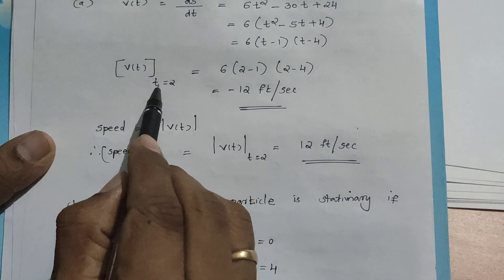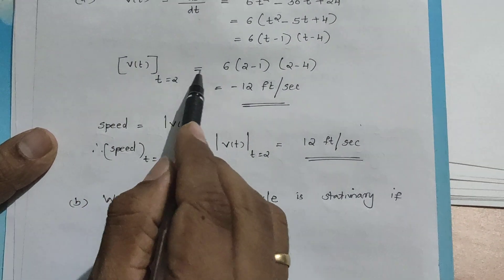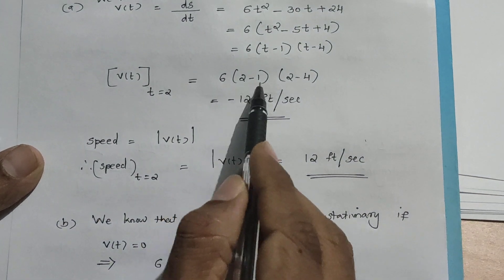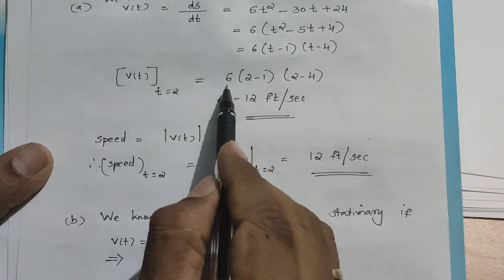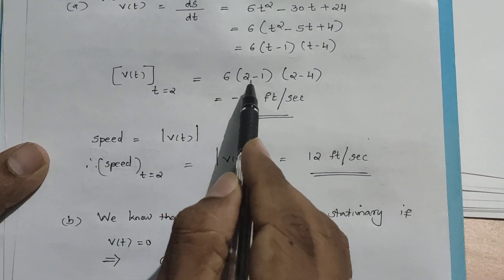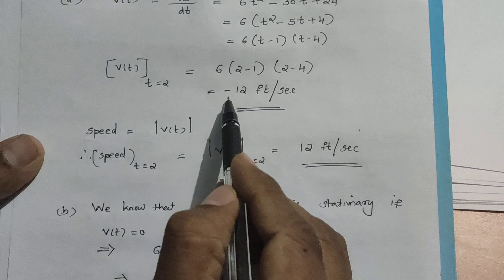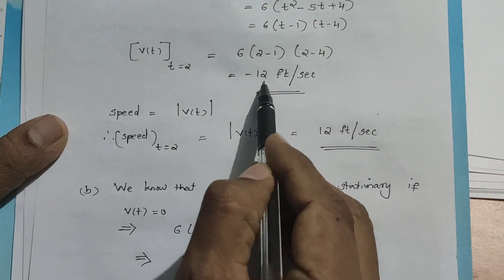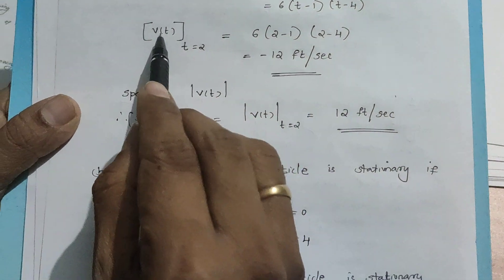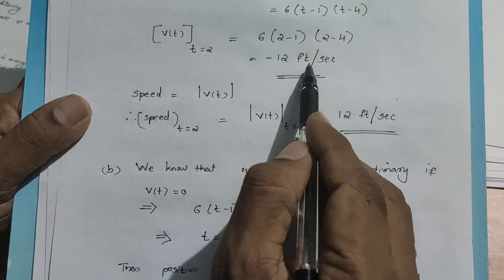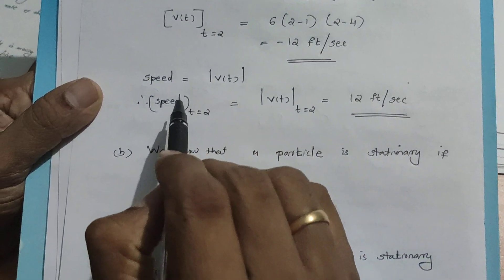We substitute t equal to 2 into v(t): we get 6 into (2 - 1) into (2 - 4), which is equal to -12. This is the velocity and its unit is feet per second.